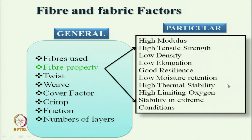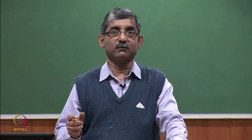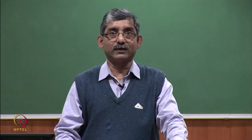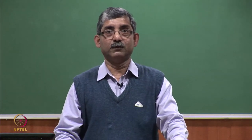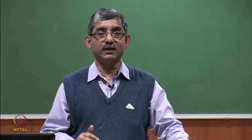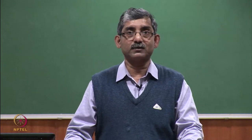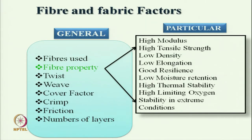High thermal stability is required because during bullet penetration at high speed there is high heat generation, so the fibre should not melt, shrink or deform. Also stability in extreme conditions is needed, as at extreme heat or extreme cold the fibre can degrade or become brittle and lose its characteristics. This is extremely important because body armours are used in extreme conditions.